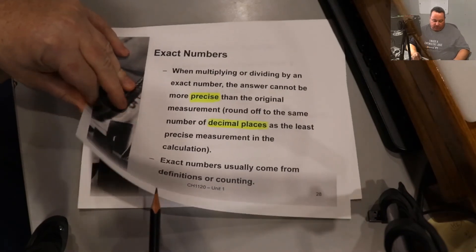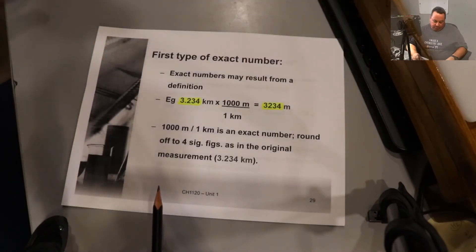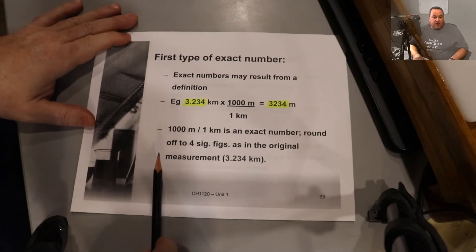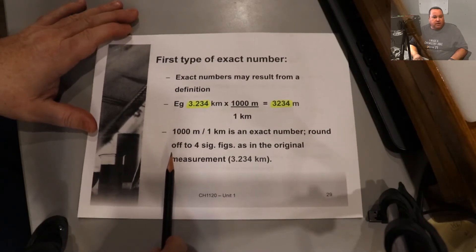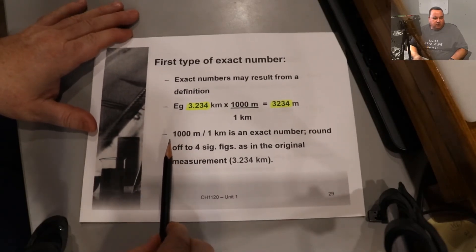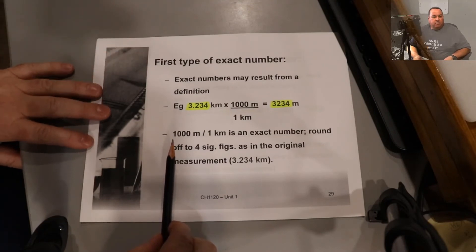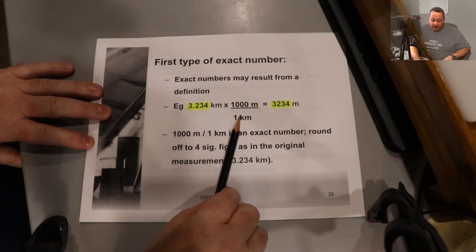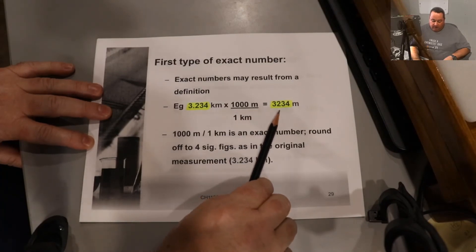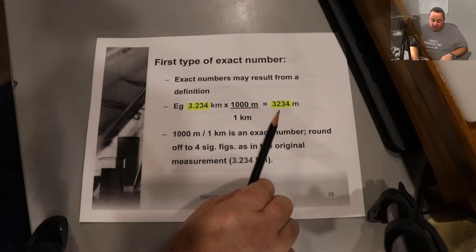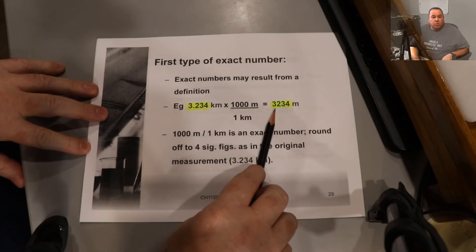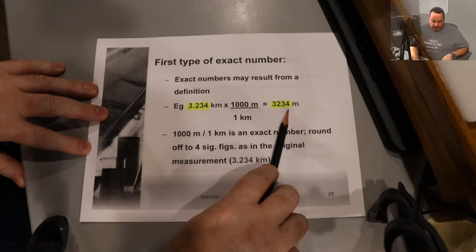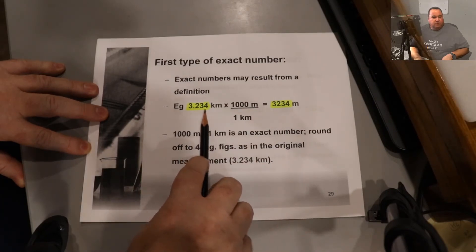So, let's have a look at an example here. This exact number comes to us from a definition, so we're changing our base unit from kilometers to meters. We multiply by a conversion factor here. And this one can be a little confusing because we don't have any decimal places, but we have the same number of digits in the final answer. It's really just a decimal move.